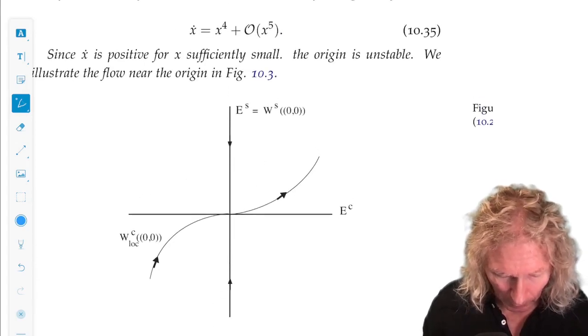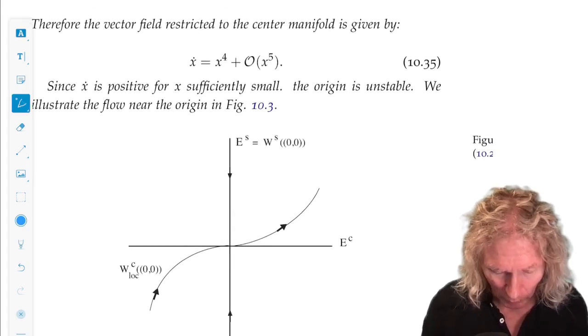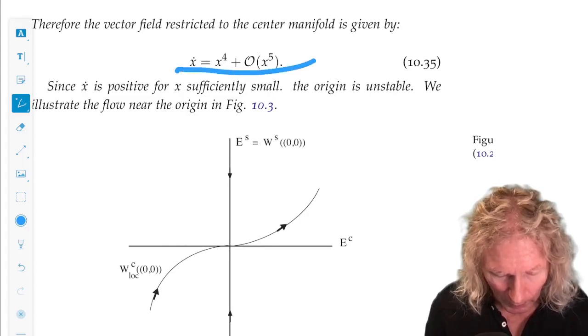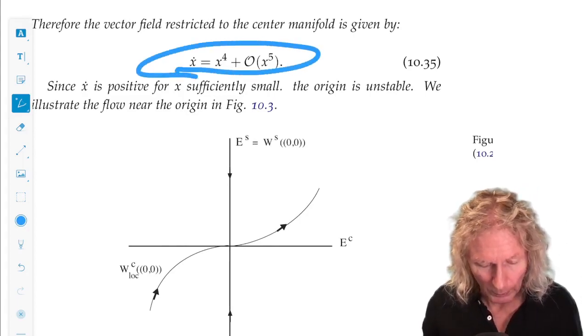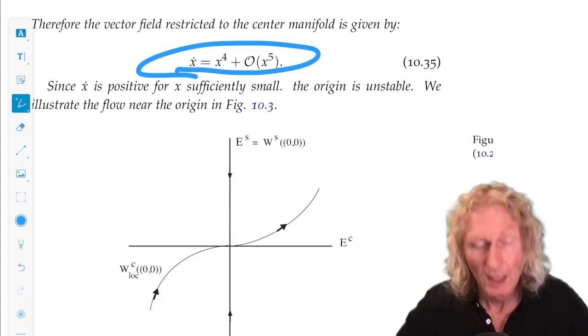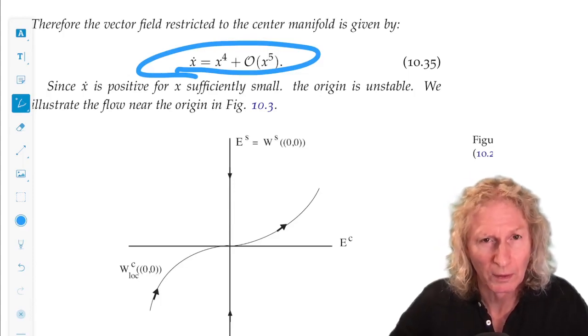So that's the equation for the center manifold. So locally, it looks like this cubic. The equation restricted to the center manifold, we see it's always positive, and the origin is unstable in this case.